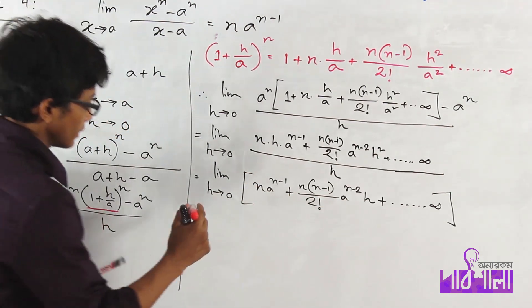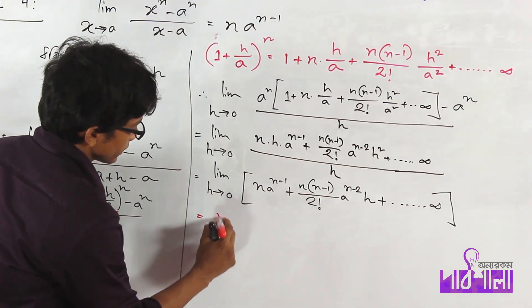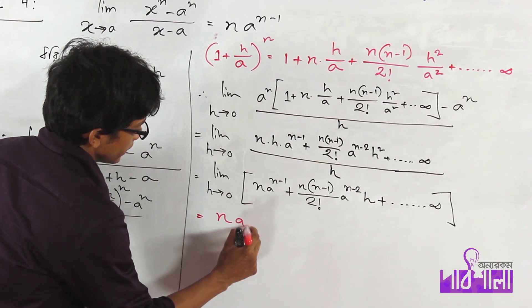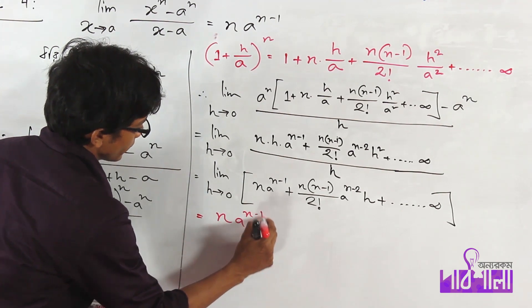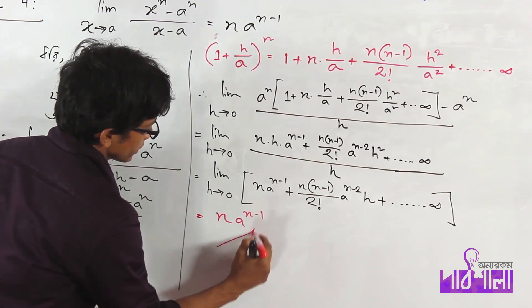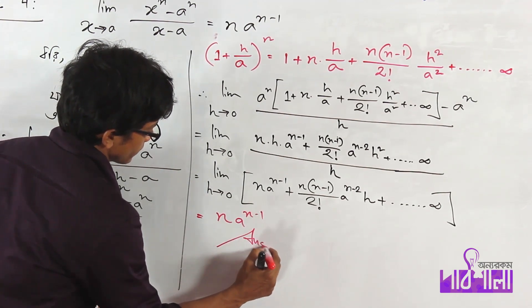Now taking the limit as h tends to 0, all terms containing h vanish, and the answer is n times a to the power n minus 1. This is the answer.